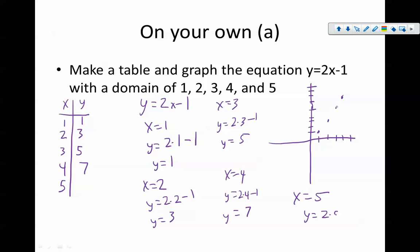And then finally x equals 5 is going to be y equals 2 times 5 minus 1, which is 9. So we have the point 5, 9 right there. All right, if you've got questions, comments, concerns on that, make sure you ask them.